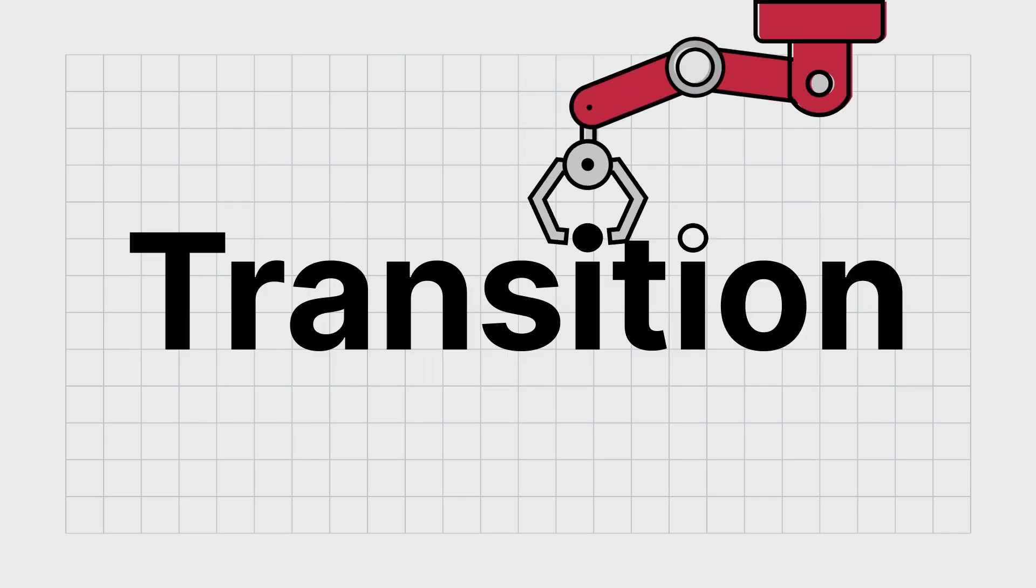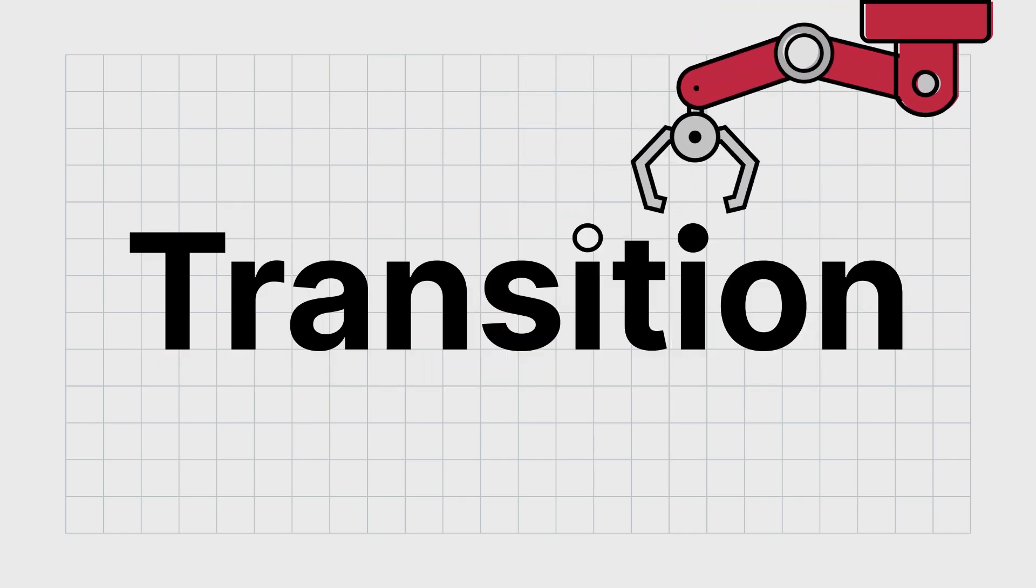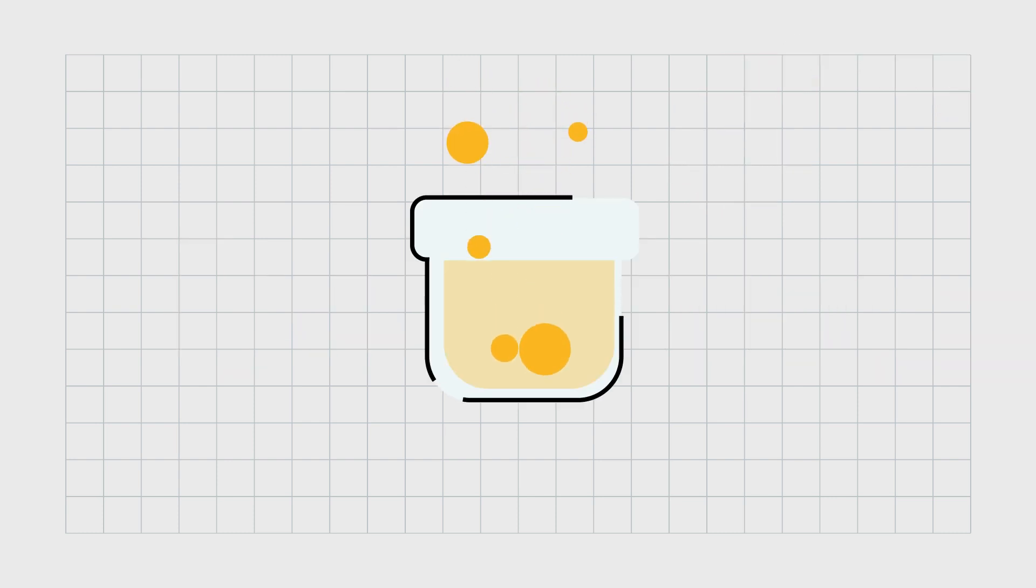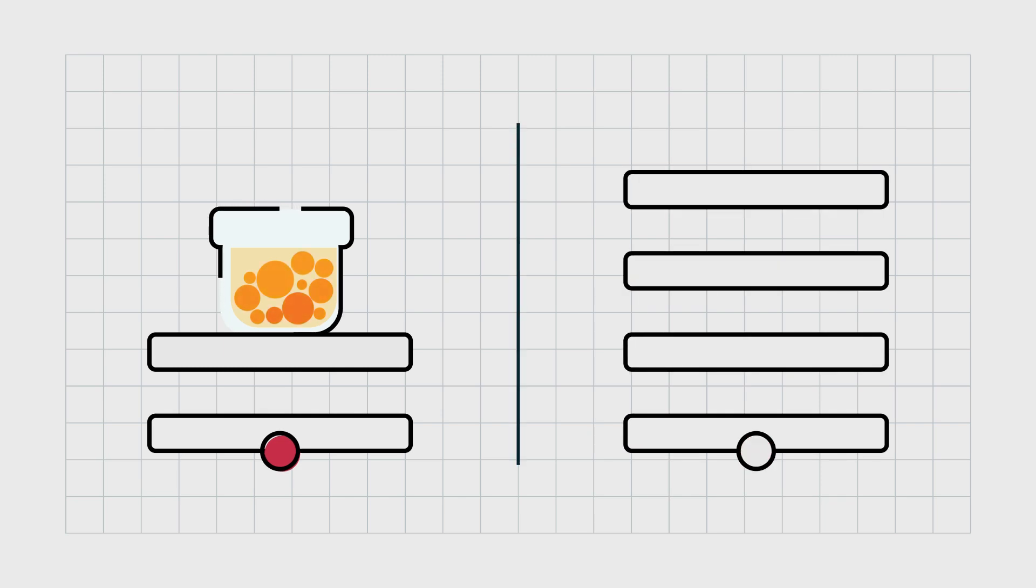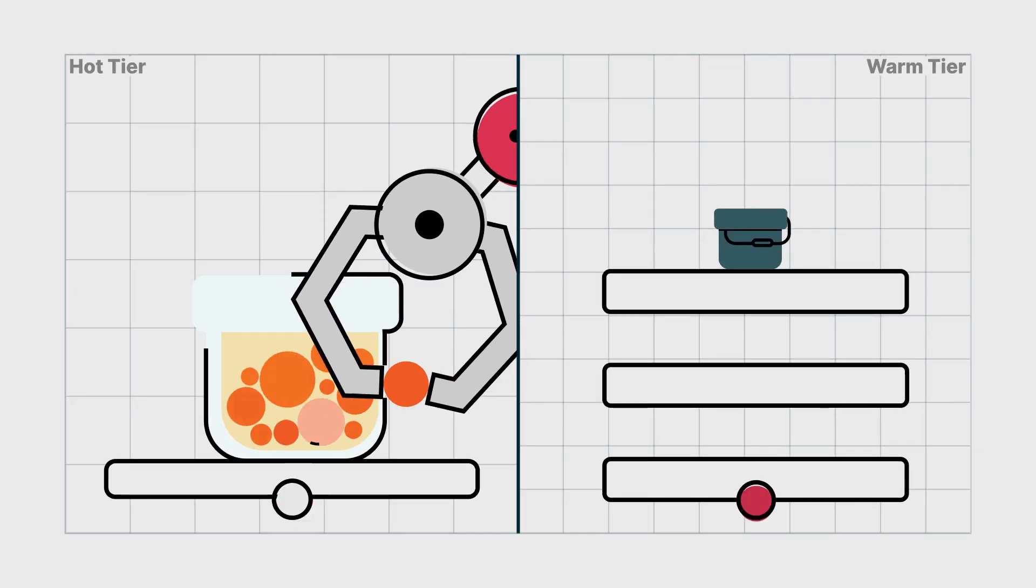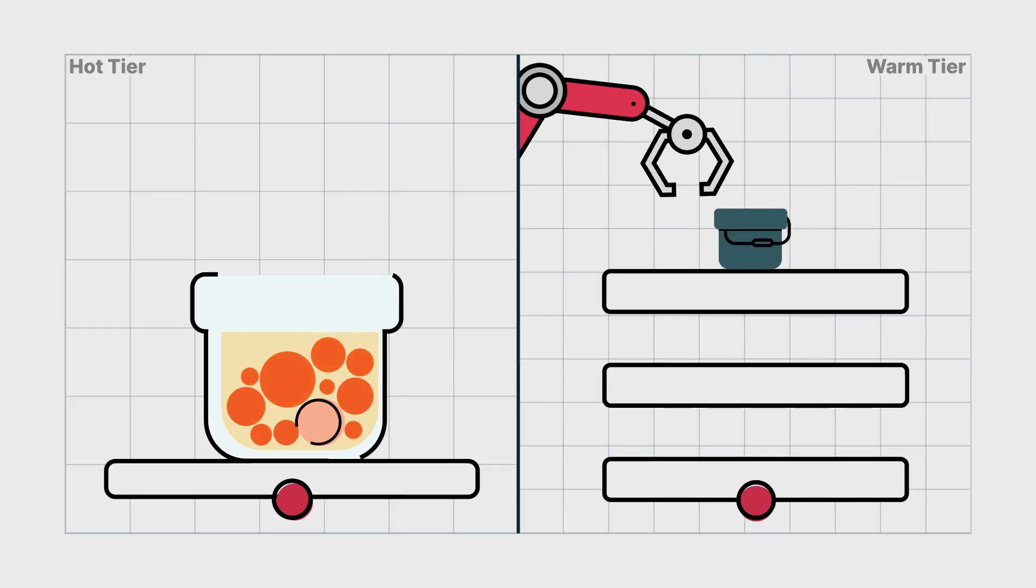The second option is to transition the object, which moves it to a different cluster. This allows you to seamlessly retain your data in a cost effective manner by using two tiers. Let's call our two tiers hot and warm. After some time, the bucket will move the object to the warm tier.